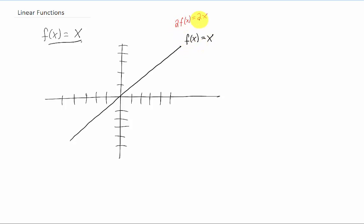Now what would happen to this function if we multiplied it by 2? We could call that 2f of x or 2x. Well, that line would get steeper. It's as if we took our original line and pulled it vertically in both directions. We're going to call that a vertical stretch.